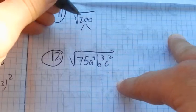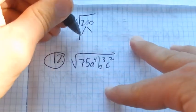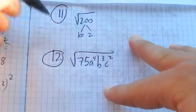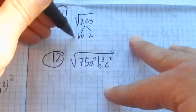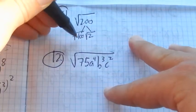What I see is 200 is 100 times 2. And notice I chose 100 because I can square root that and get a whole number.